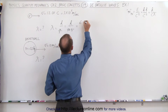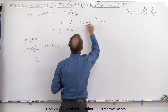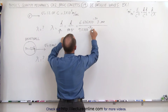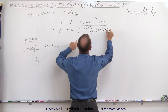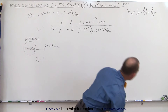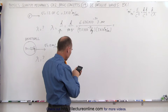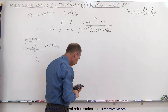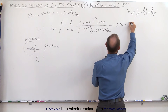Planck's constant is 6.626×10⁻³⁴ joule·seconds, divided by the mass of an electron — 9.11×10⁻³¹ kilograms — and the velocity of 3×10⁶ meters per second. Working out the units gives us meters for wavelength. Using a calculator: 6.626e-34 divided by 9.11e-31 divided by 3e6, we get a wavelength of 2.42×10⁻¹⁰ meters.